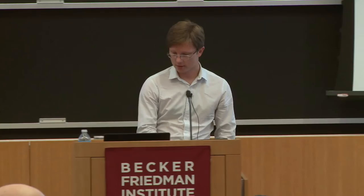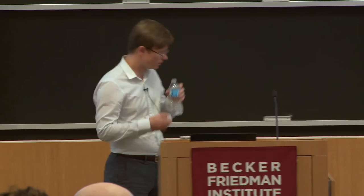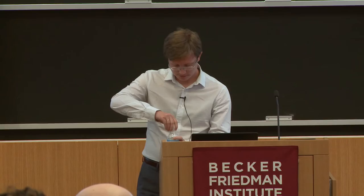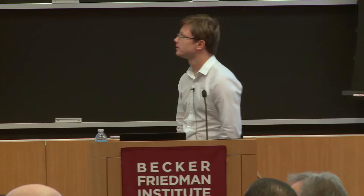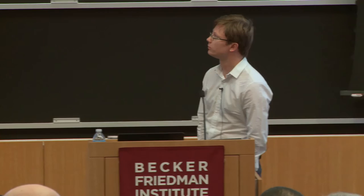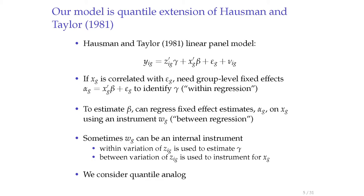Before going to the estimation strategy, I want to relate our model to the literature, because my view is that this quantile panel data model is still in the modeling stage—there are many different models you can consider for such a data structure. Our model is actually a quantile extension of Hausman and Taylor (1981). That paper is a panel data model with mean regression instead of quantile regression, and they're also interested in a situation where group-level unobservables epsilon_g are correlated with group-level treatment x_g.